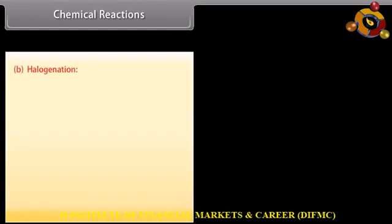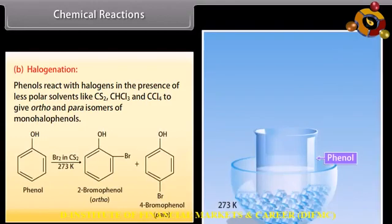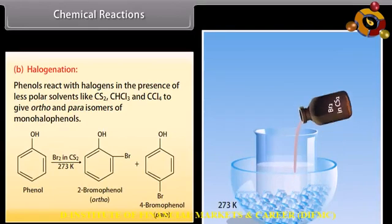Halogenation: phenols react with halogens in the presence of less polar solvents like carbon disulfide, chloroform and carbon tetrachloride to give ortho- and para-isomers of monohalophenols. Bromine in carbon disulfide reacts with phenol and forms 2-bromophenol and 4-bromophenol.